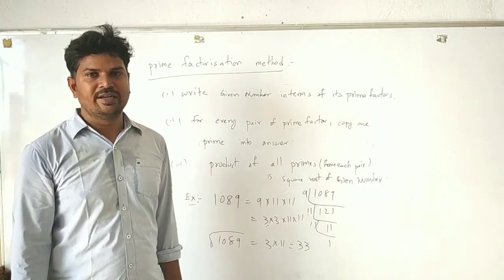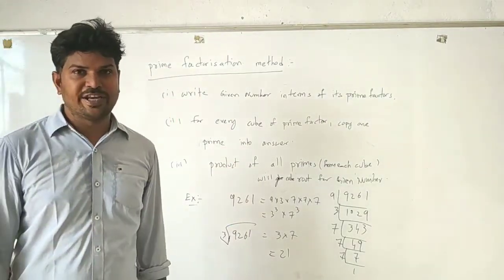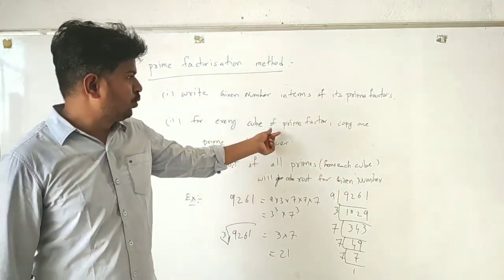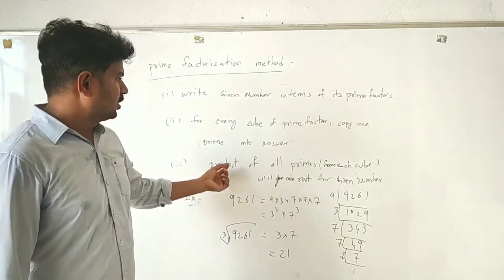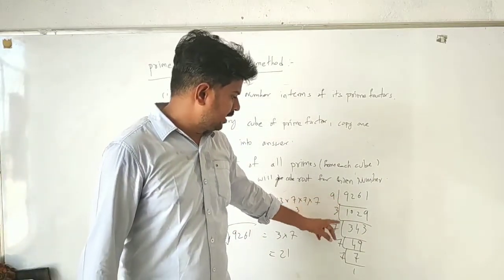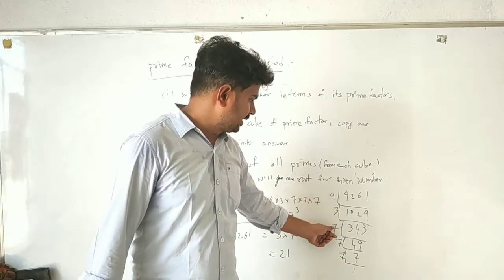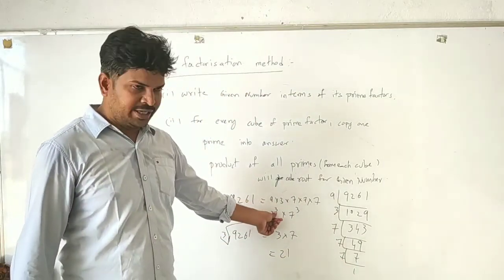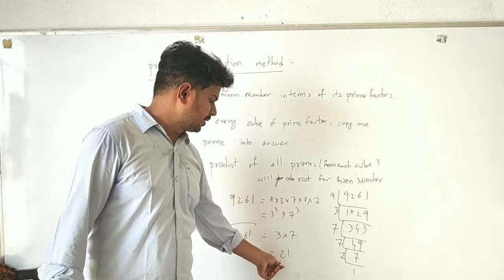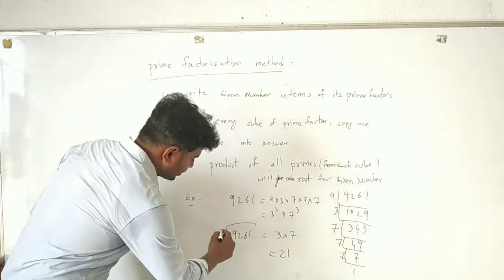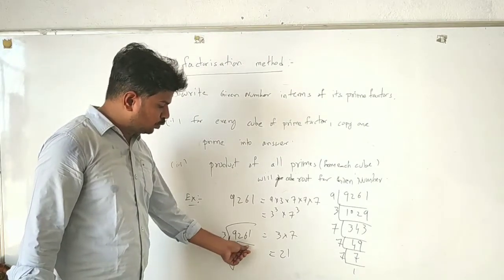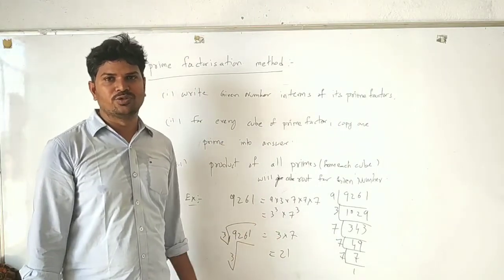Let's use the same prime factorization method for finding cube root. Write the given number in terms of its prime factors. For every cube of a prime number, copy one prime into the answer. The product of all primes from each cube gives you the cube root. Take the example 9261: dividing thoroughly gives factors 3, 3, 3, 7, 7, 7. We have three 3s and three 7s, so copy one 3 and one 7, giving 3 times 7 equals 21. So the cube root of 9261 is 21.